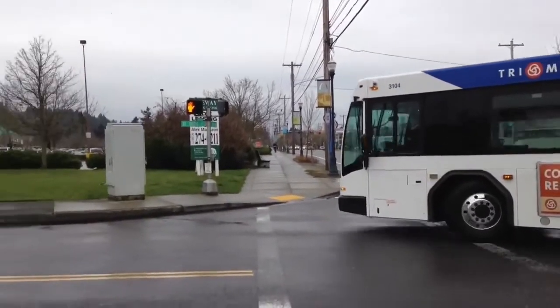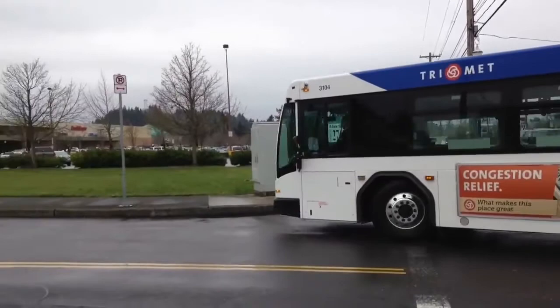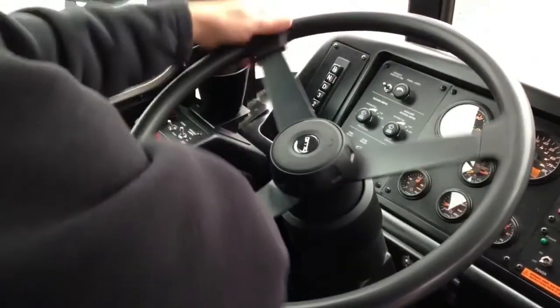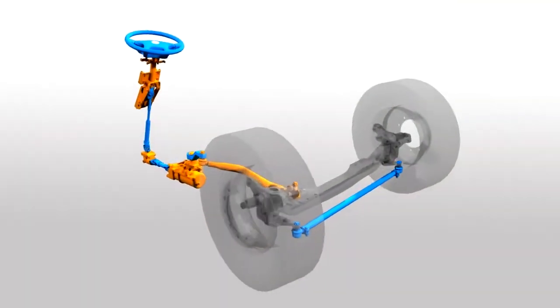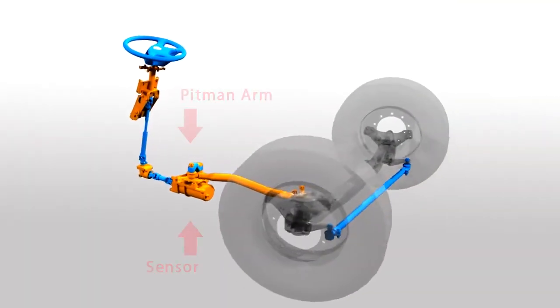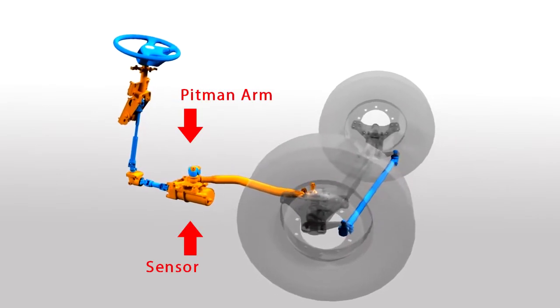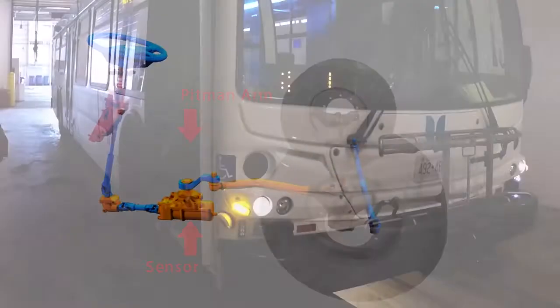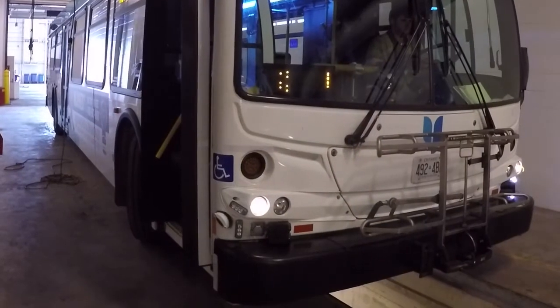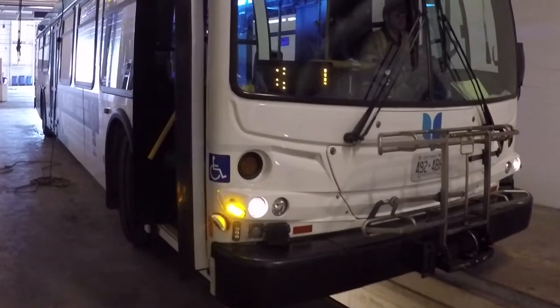The system's operation is simple yet dependable. As the steering wheel of the bus is turned, the pitman arm will pass over one of the system's proximity sensors, activating the turn warning announcement and visual LEDs.